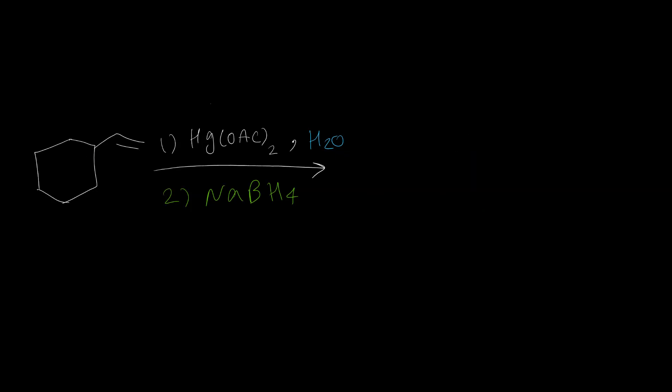Here is another example. This carbon is primary and this carbon is secondary, so we should have OH on the secondary carbon and hydrogen on the primary carbon.